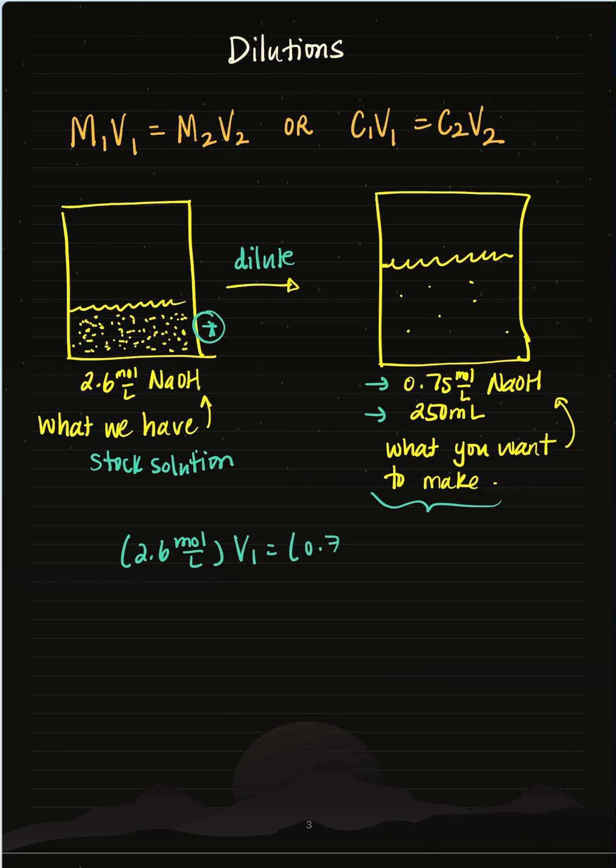M2 is the concentration of the solution I want to make. So that's 0.75 and then V2 is the volume I want, which is 250 ml. I'm going to change that to liters so my units cancel out properly.